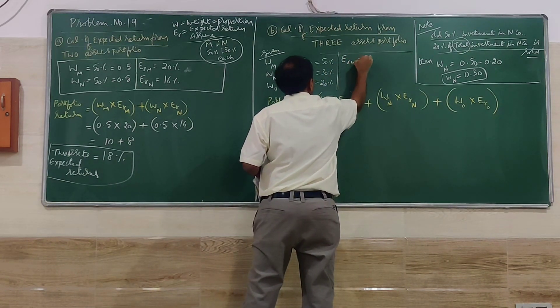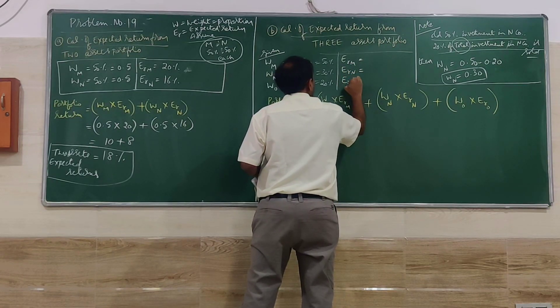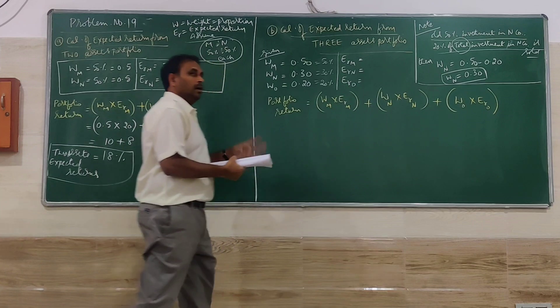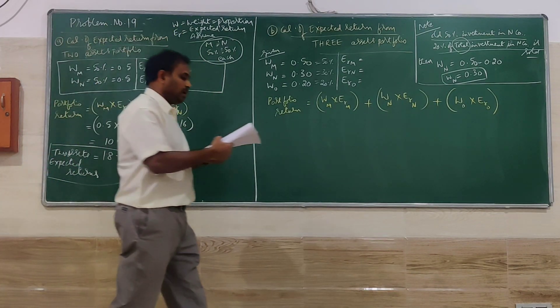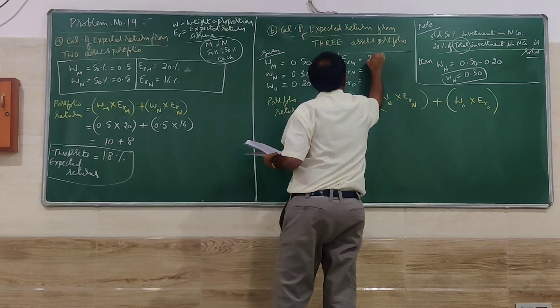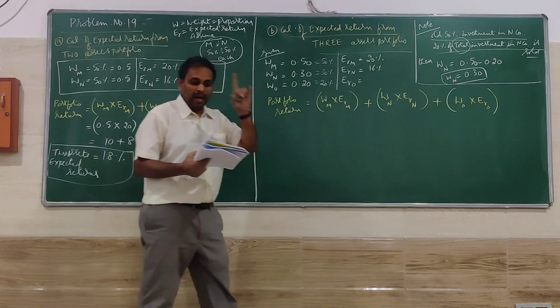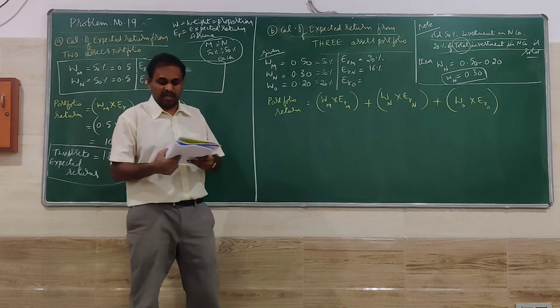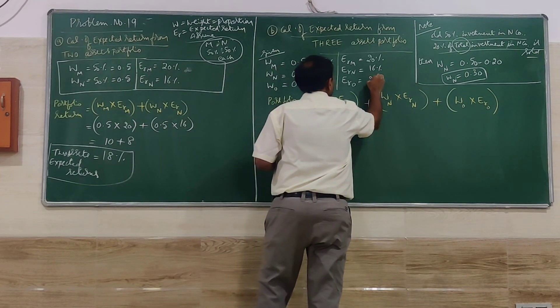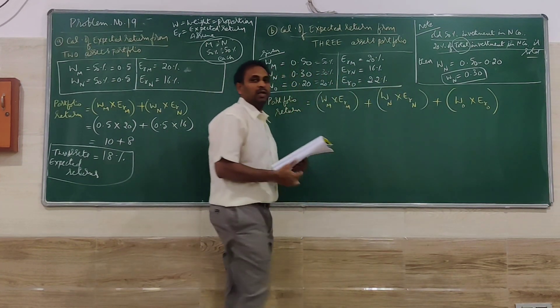Then E-R of M, E-R of N, E-R of O. As I said, M and N returns remain the same: 20% and 16%. They give in the problem that the return on O company script is 22%. This is what is given in the problem.